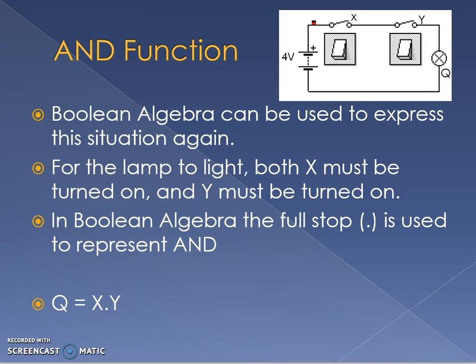And that is known as an AND function. We could summarize an AND function as a circuit like this. So the only time the electricity is going to flow around that circuit is when both those switches are turned on. In Boolean algebra, a full stop is used to represent AND. So this equation reads Q equals X AND Y.